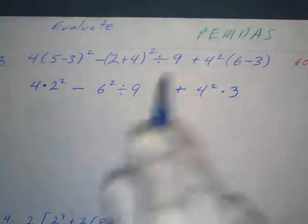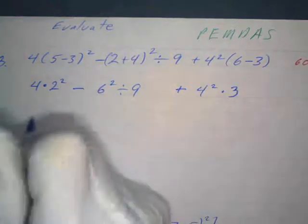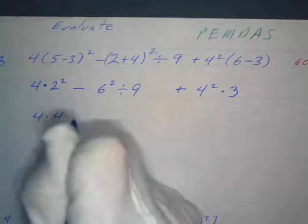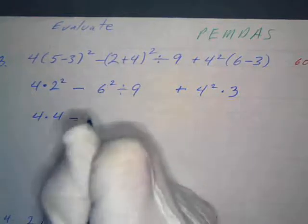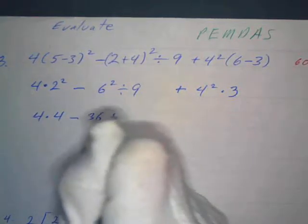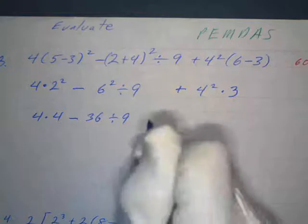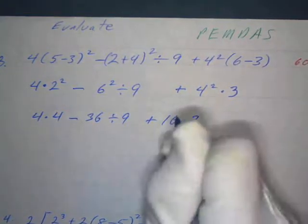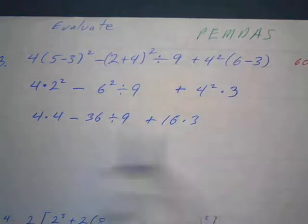Next thing we do is we do exponents. So four times, and what's two squared? Four. Minus six squared is thirty-six divided by nine, plus, and what's four squared? Sixteen times three. So we just do our exponents.